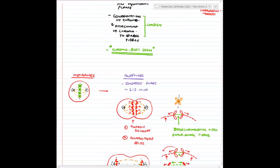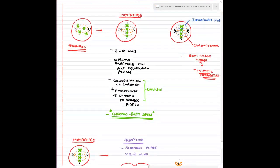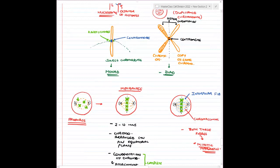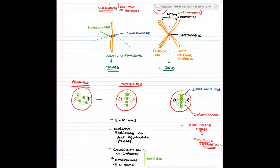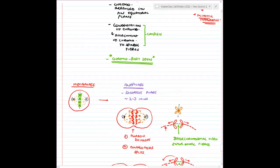After prophase — chromosomes arranged randomly. In metaphase — chromosomes pulled to the center, arranged on an equatorial plane. In anaphase — chromosomes are separated and the two sister chromatids start moving towards opposite poles. In telophase — it is the reversal of prophase.